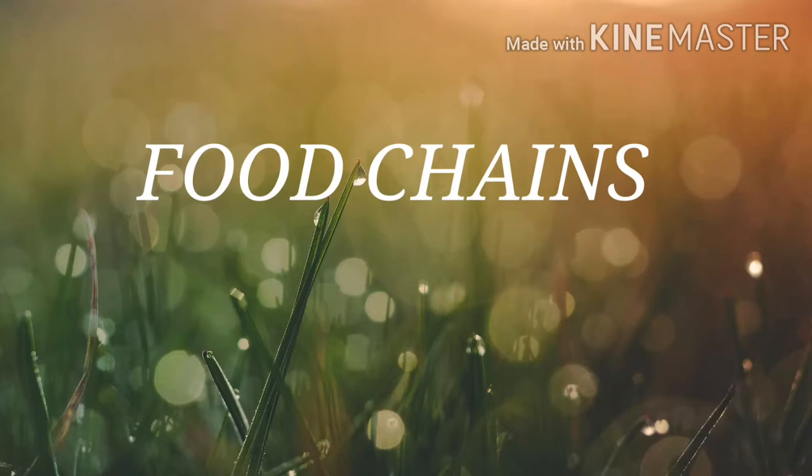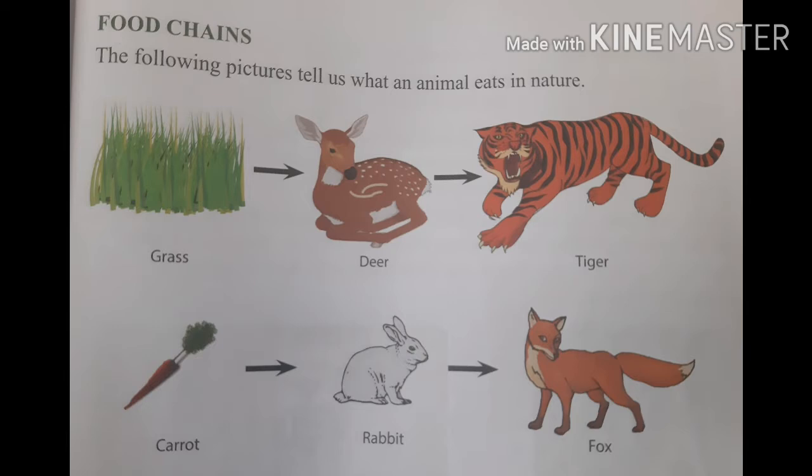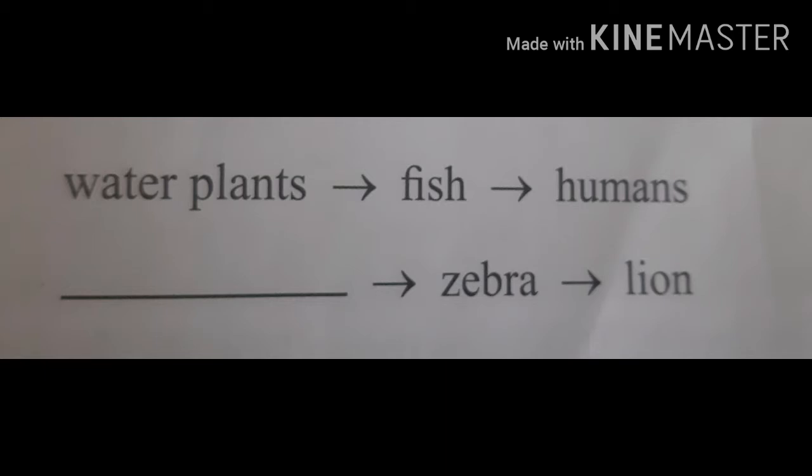Next is food chains. The following pictures tell us what an animal eats in nature. In the first picture, grass is eaten by a deer and the deer is eaten by a tiger. In the second picture, a carrot is eaten by a rabbit, and the rabbit is eaten by a fox. The grass, deer and tiger form a chain. Such a chain which tells us who eats what in nature is called a food chain. All animals depend on plants for their food, so all food chains start from a plant or plant product.